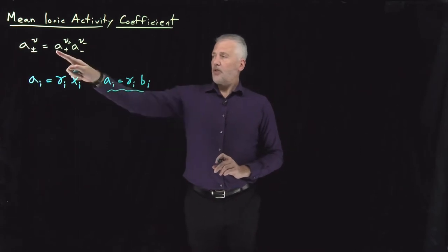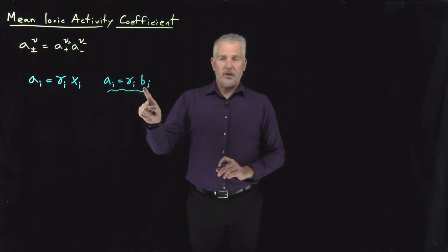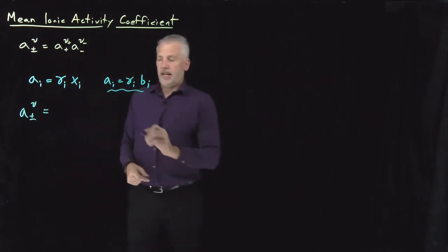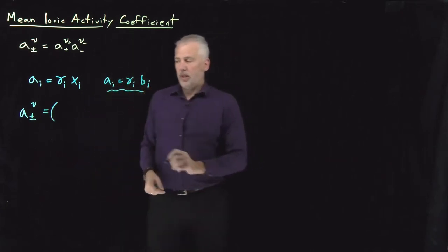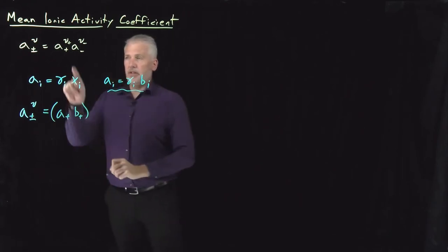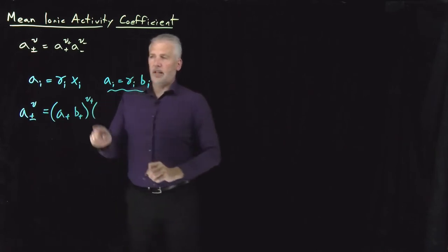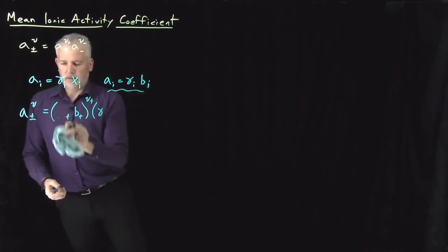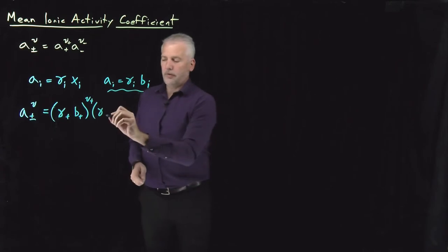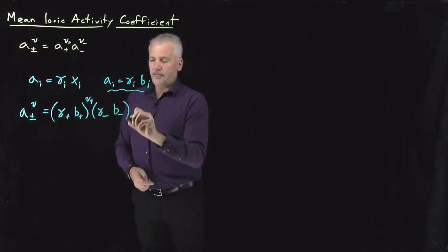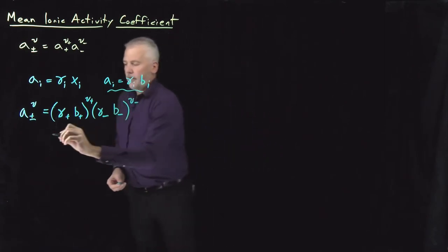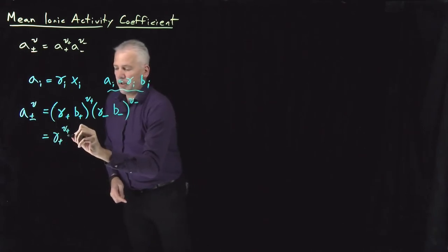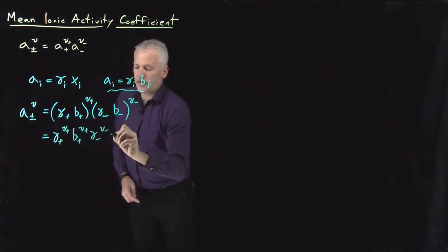If we imagine replacing these activities with their expressions using an activity coefficient and a concentration, we can rewrite the mean ionic activity. The activity of the cation would be an activity coefficient gamma plus times the molality of the cation, all raised to the stoichiometric coefficient ν+. Likewise for the anion activity: gamma minus times the molality of the anion, raised to the stoichiometric coefficient ν−.